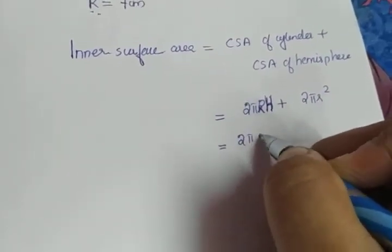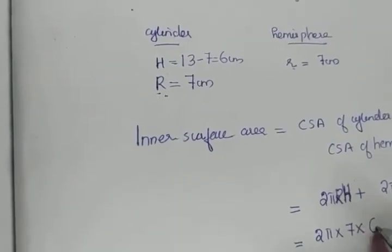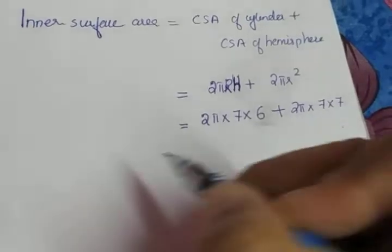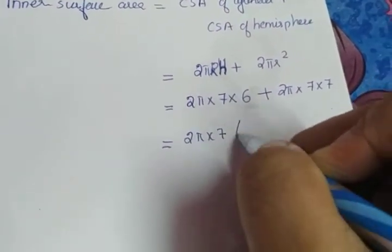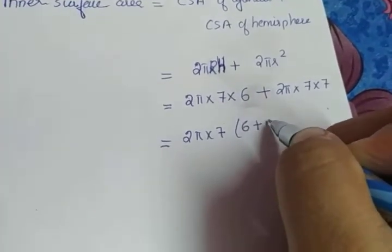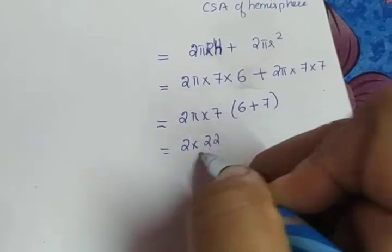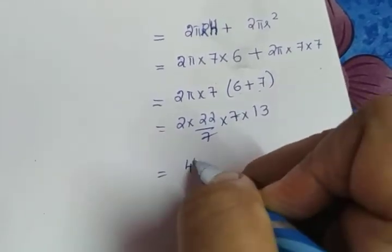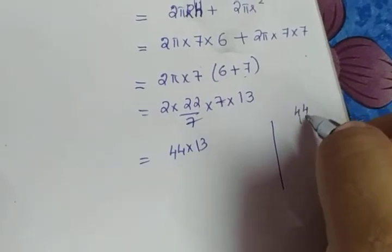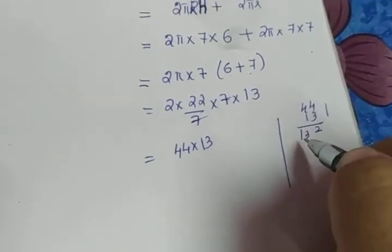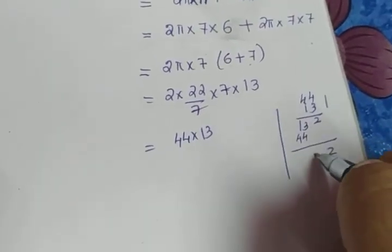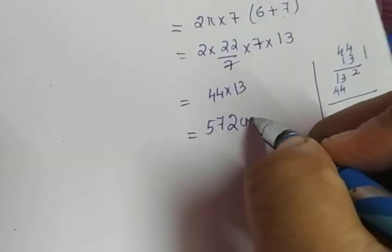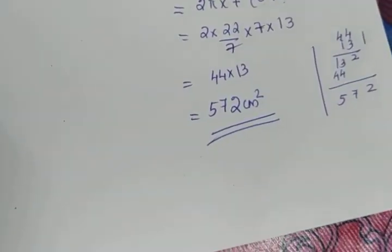Substituting: 2π × 7 × 6 + 2π × 7². The common factor is 2π × 7, leaving 6 + 7 = 13. So we get 2 × (22/7) × 7 × 13. The 7 cancels, giving 44 × 13 = 572. Since we found the surface area, the unit is cm². The answer is 572 cm².